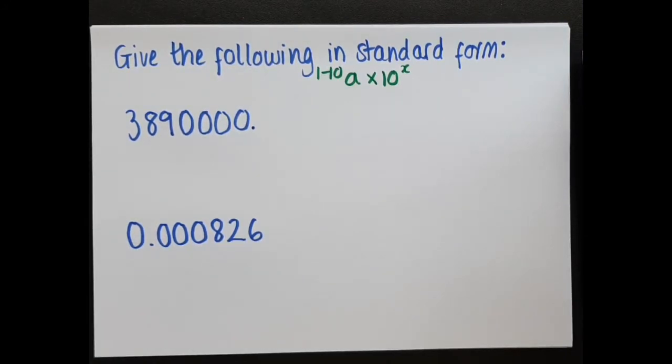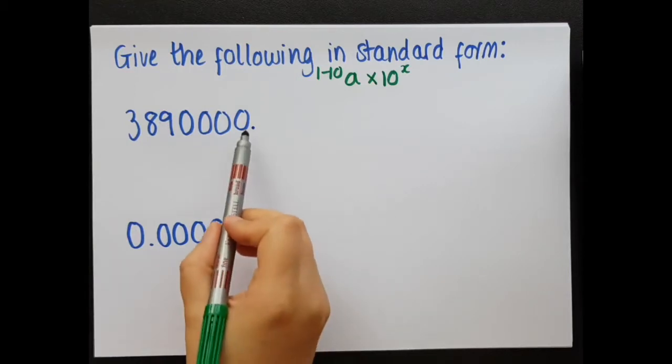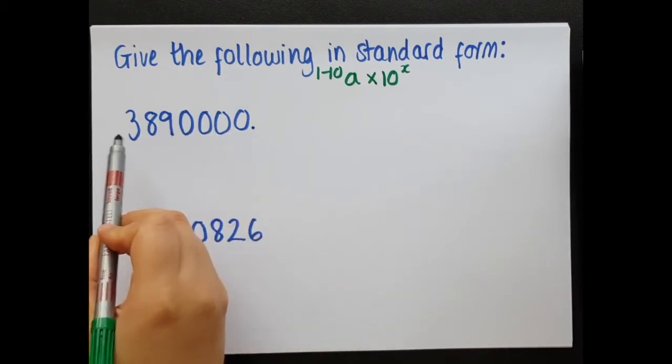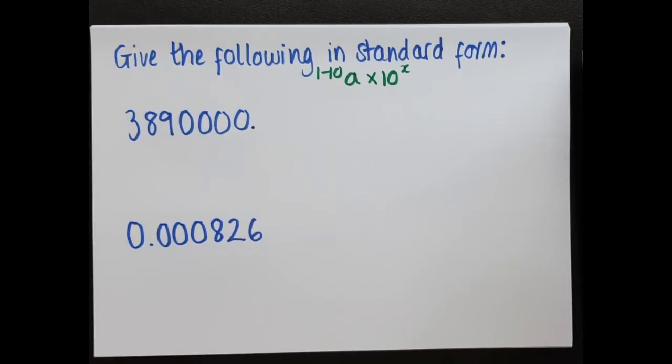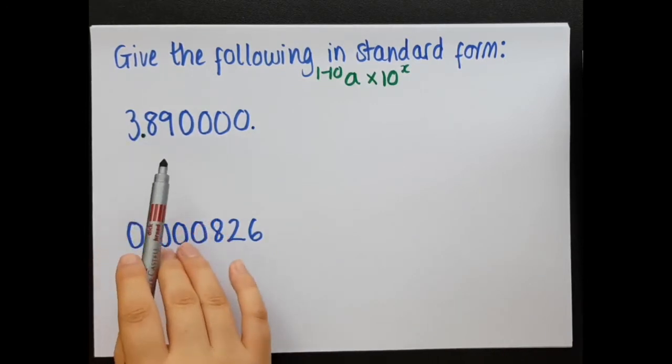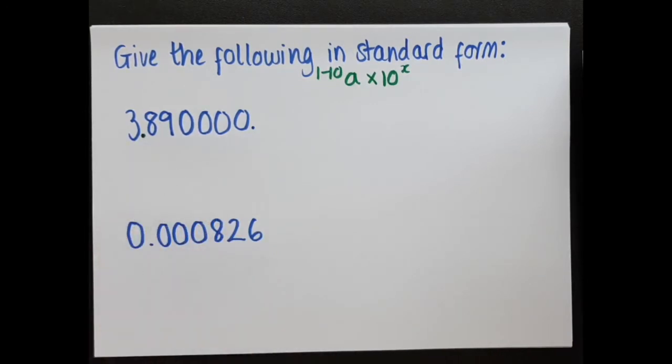What I want to do now is put in a decimal point to make this a number that is between 1 and 10. I can put the decimal point in any of these places, but there's only one place I can put it to make it between 1 and 10, and that is there. So, now I've got 3.89, and that is between 1 and 10.